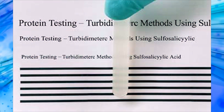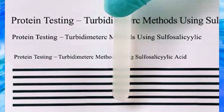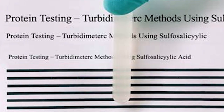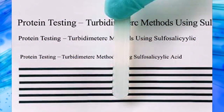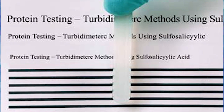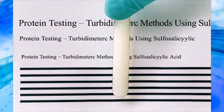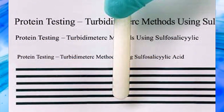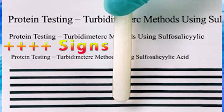Heavy turbidity but no fragmentation, or cannot read but can see letters — we give 2 plus signs for protein. Heavy turbidity with light fragmentation, or cannot see letters — we give 3 plus signs for protein. Heavy turbidity with heavy fragmentation, or white clot — we give 4 plus signs for protein.